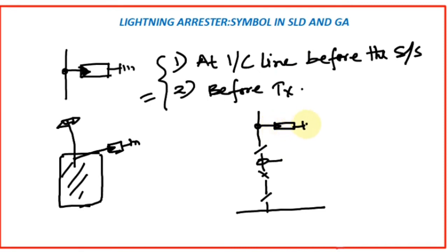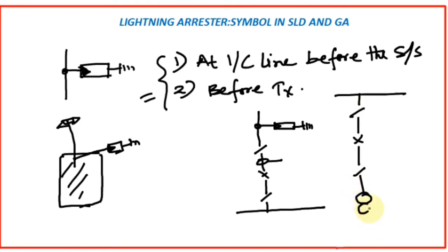Now, another location: from the bus bar there is a transformer. The connection goes through an isolator, a circuit breaker, another isolator, and then to the transformer with a CT. All these are outdoor equipment. So just before the transformer, there will be another lightning arrestor. These two are the basic locations of lightning arrestor.